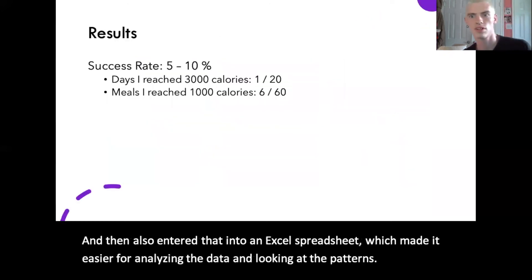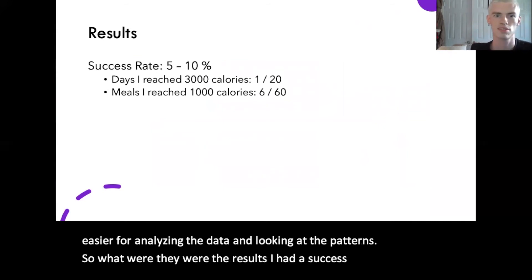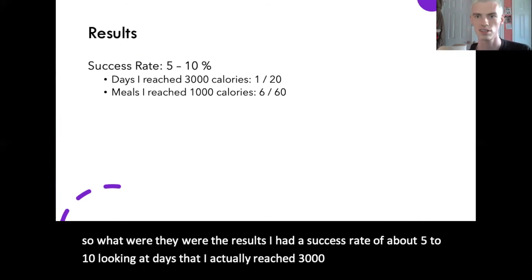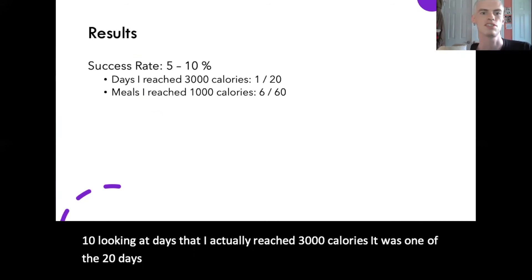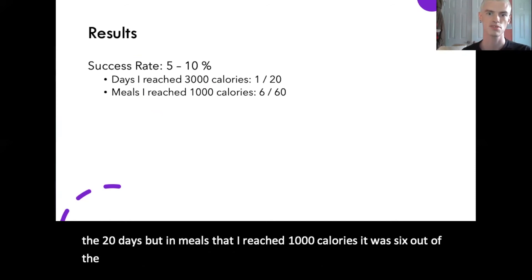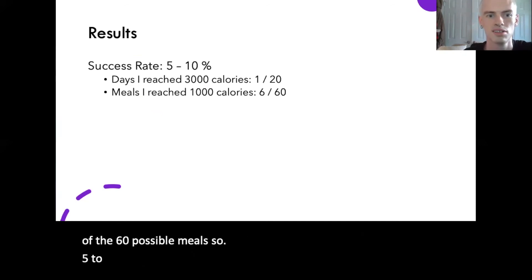What were the results? I had a success rate of about five to ten percent. Looking at days that I actually reached 3000 calories, it was one out of 20 days. But in meals where I reached 1000 calories, it was six out of 60 possible meals — so roughly five to ten percent.